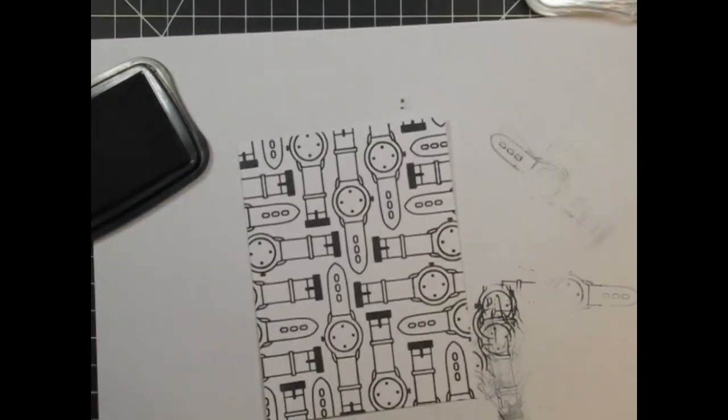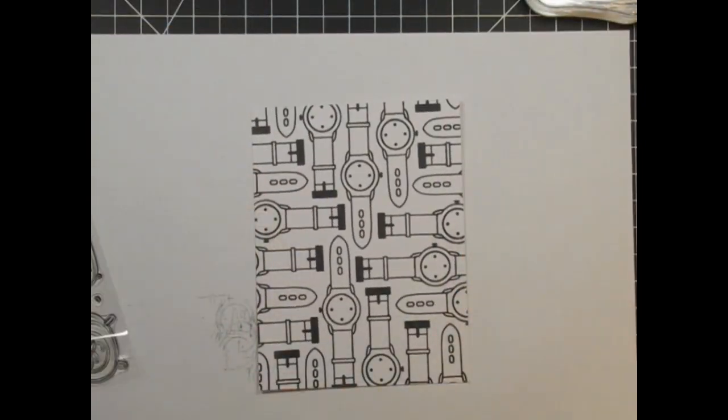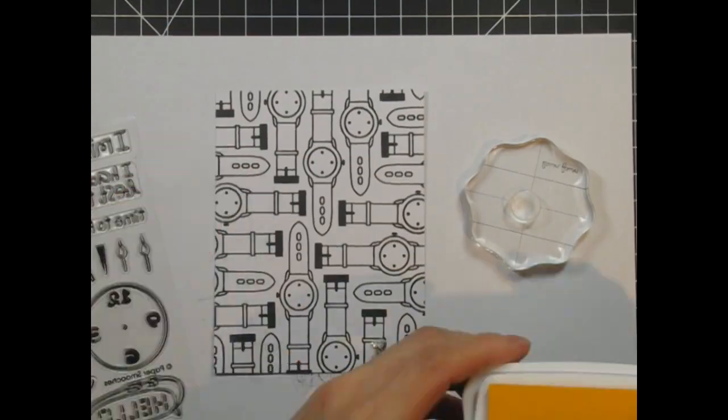Now I'm going to stamp the clock face onto the watches using Memento Luxe ink in Dandelion. This is a nice bright happy yellow.